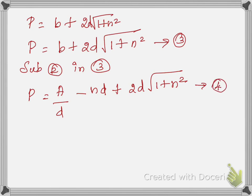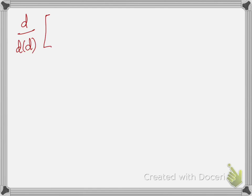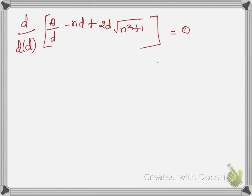For the most economical section, the wetted perimeter must be minimum, so dP/dD = 0. Differentiating equation 4 with respect to D using the power rule (d/dD of x^n = n·x^(n−1)): differentiating A/D gives −A/D², and differentiating −nD gives −n.